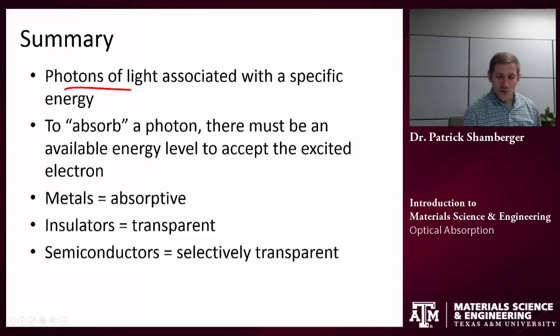So in review, photons of light are associated with a specific energy. In order to absorb a photon, we have to excite an electron from the valence band up to some unoccupied space. So this is easy to do for metals because there are unoccupied orbitals immediately above those occupied orbitals.